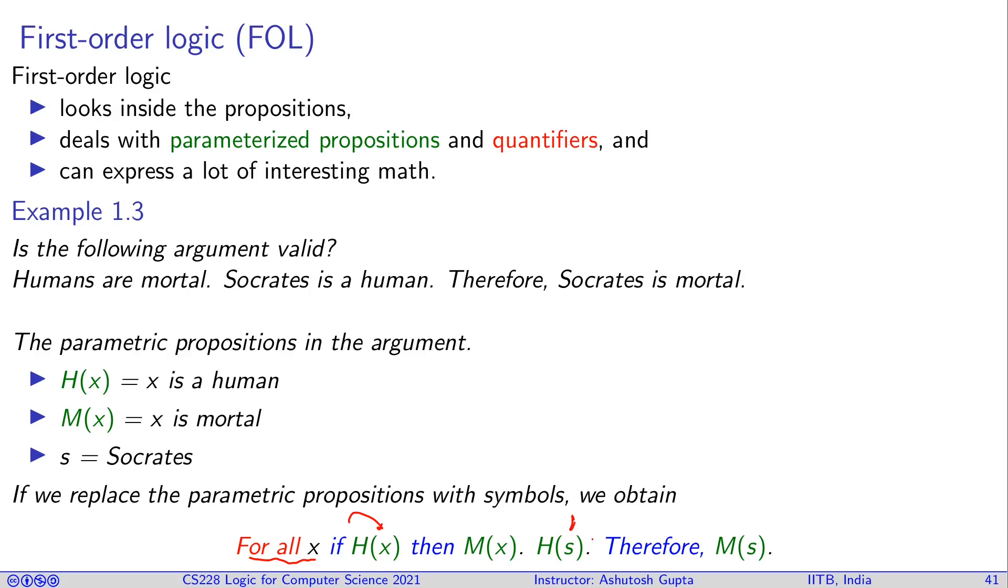We know if you put Socrates in this human predicate you get true. So that means you write H of s. Then the argument says therefore I can conclude that M of s. So that's the symbolic form of the argument. We will study how can we write such symbolic arguments and then how can we check its validity using some algorithm, some proof system, the way we have been doing for propositional logic.